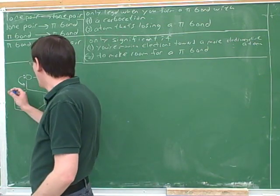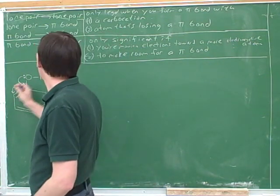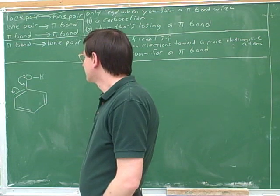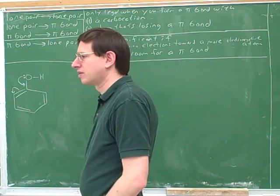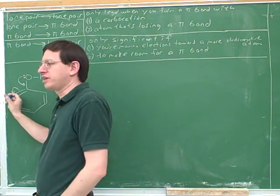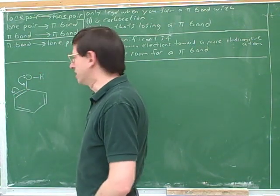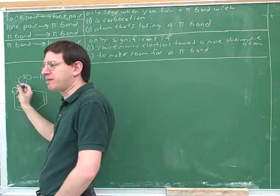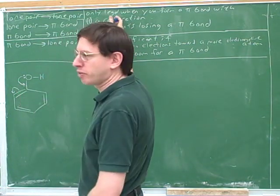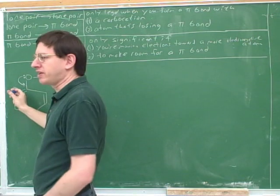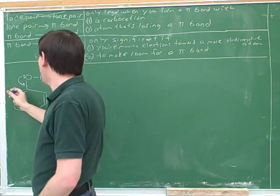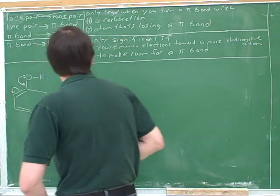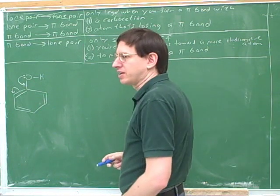For example, in this case, notice that this arrow is forming a lone pair, so we have to decide whether it's significant or not. We're not moving the electrons towards a more electronegative element, so our first criterion doesn't apply. But there's a good reason to move these electrons: we've got to move this pi bond out of the way to make room for the pi bond that's coming in from behind. So this is a significant arrow — not because of electronegativity, but to make room for the incoming pi bond.